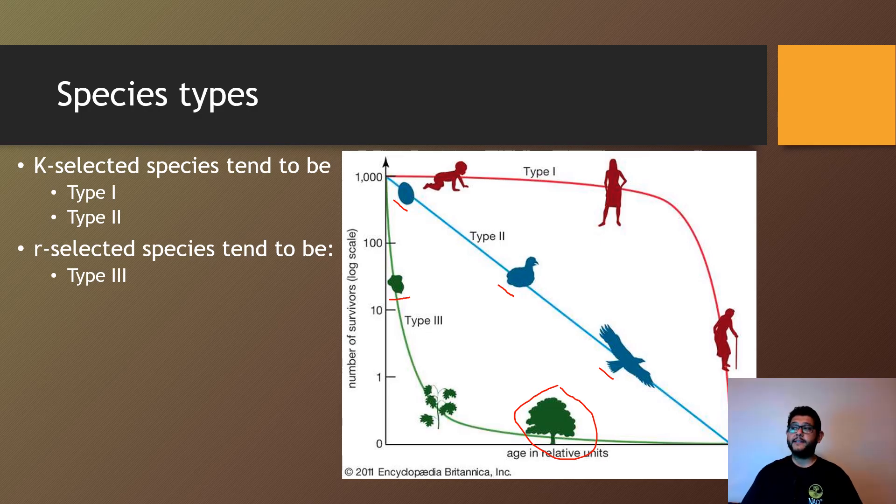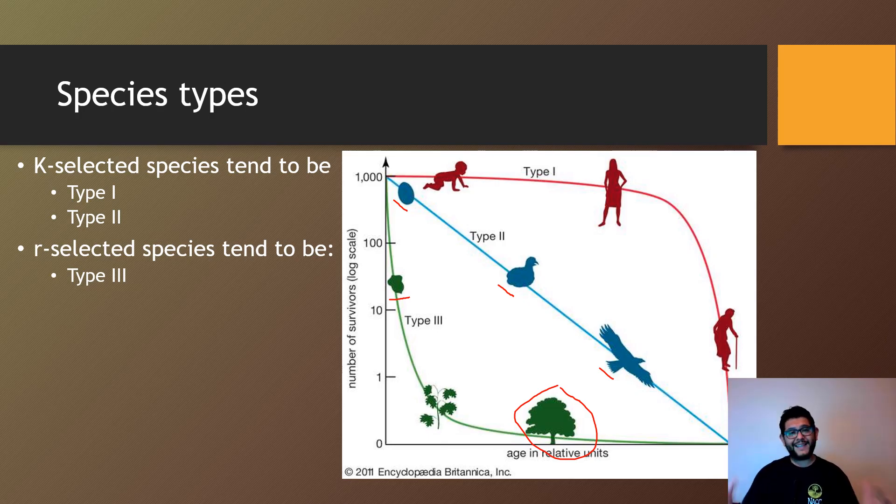So K-selected tends to be Type I and Type II for the most part. Type II is kind of that gray area we mentioned from the last video. But then R-selected is pretty much always Type III. So that's something to kind of bear in mind when you're looking at these. And to put the concepts together would be a good way to review and study those.